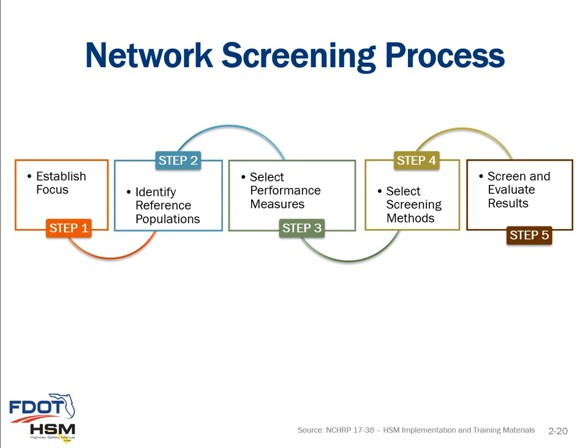The overall network screening process is a process of reviewing the transportation network to identify and rank sites from most likely to least likely to realize a reduction in crash frequency with the implementation of countermeasures. The HSM outlines a five-step process: Step 1, establish the focus; Step 2, identify reference populations; Step 3, select performance measures; Step 4, go through screening methods; and Step 5, screen and evaluate results.